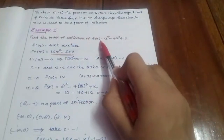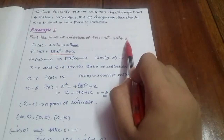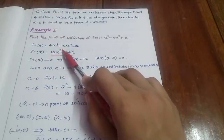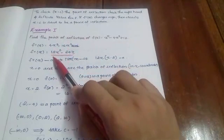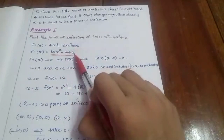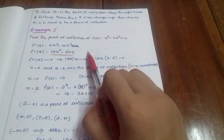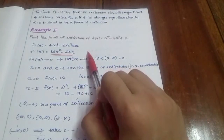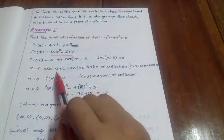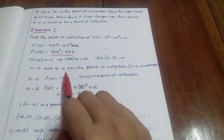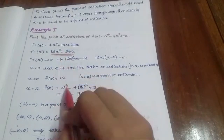Find the point of inflection of f(x) equal to x raised to 4 minus 4x cubed plus 12. Then f double dash of x is 12x squared minus 24x. If f double dash of x is equal to 0, we can find the x values. So x equal to 0 and x equal to 2 are the two points. We can find the corresponding y coordinates.